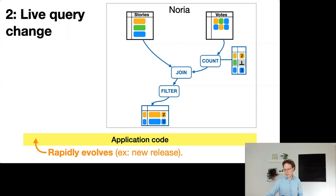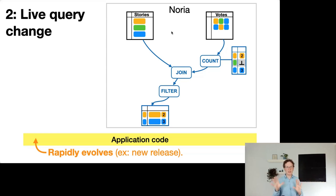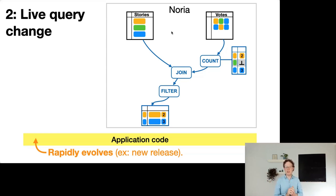We do support left join, but we don't do EXISTS. Supporting EXISTS in an incremental data flow processing way can be very difficult, particularly with the up query mechanism. Fortunately, in the web applications we looked at, there were no queries requiring EXISTS, and we believe that even if such queries did exist, you could rewrite them to be satisfiable from materialized views.